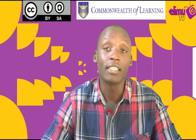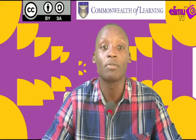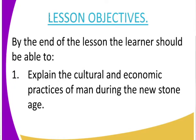At the end of the lesson, I expect that we should be able to explain the cultural and economic practices of man during the new stone age. We have three phases of the stone age: the early stone age, the middle stone age, and the new stone age. The new stone age is where the developed man took place. We'll look at the tools man made, how he obtained his food, shelter, clothing, government, and religious beliefs.